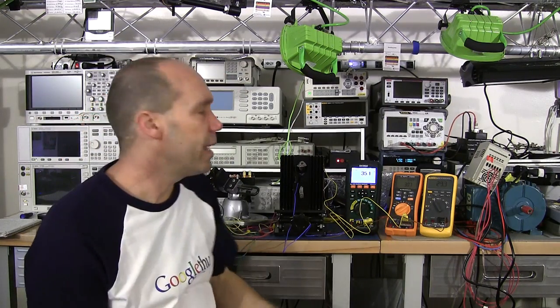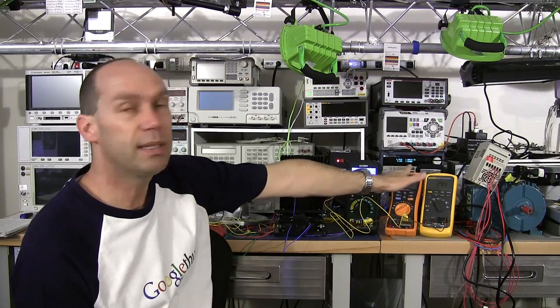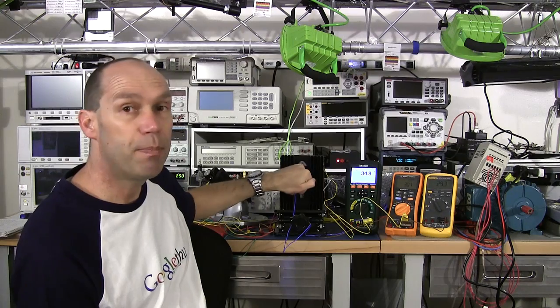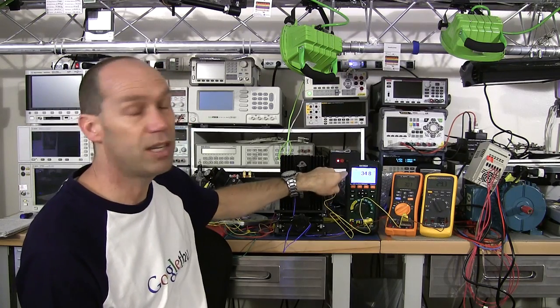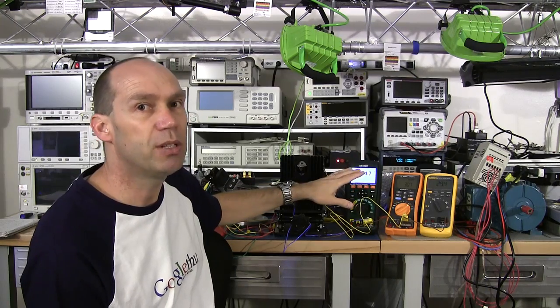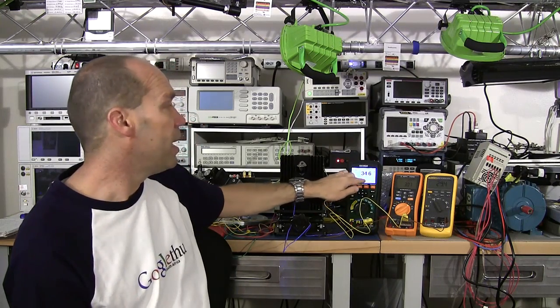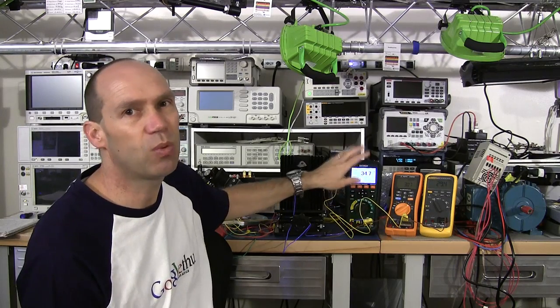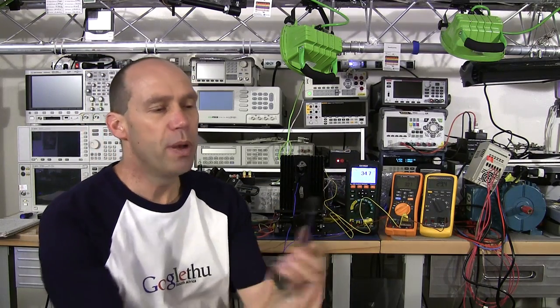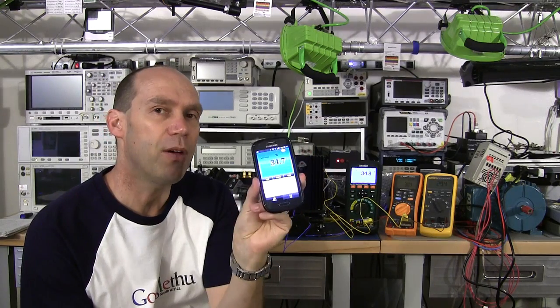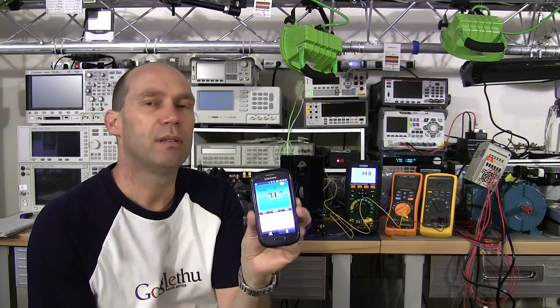Previously I've got the same multimeters—the Agilent and the Fluke 87—but the main meter monitoring the power transistor is the Extech GX900. The reason I introduced this is it's got a nice backlit color display for filming, but it also has Bluetooth and will send readings to my phone.